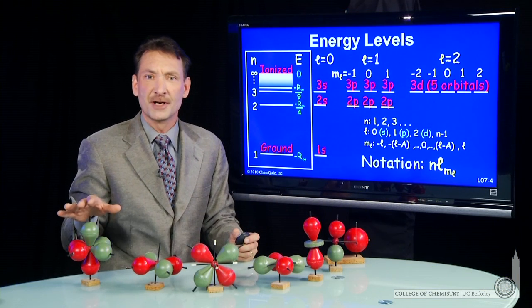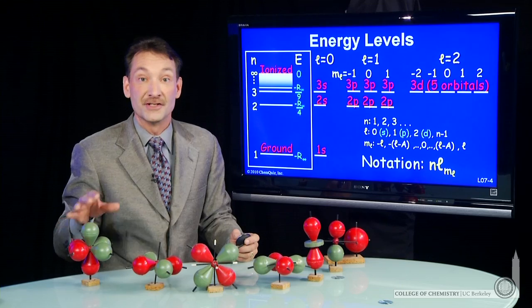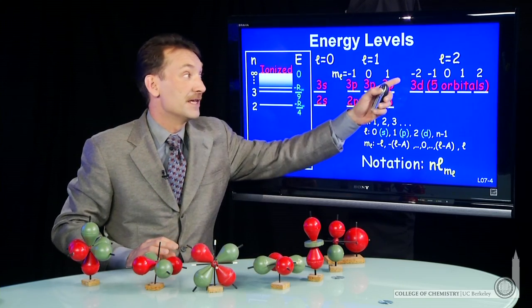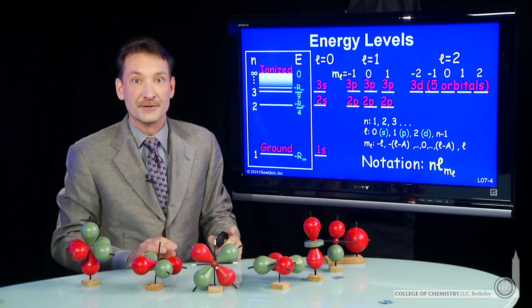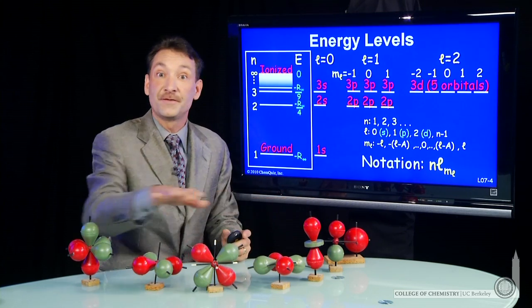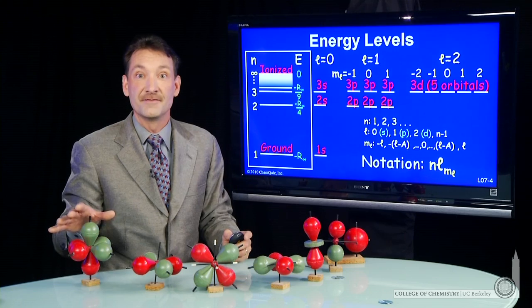And again, when you look in your textbook, these will be given geometric notations: z squared, x squared minus y squared, et cetera, rather than the m sub l integer values. We do that for purely geometric reasons. The important thing is there's five equivalent orbitals in a set of d orbitals.